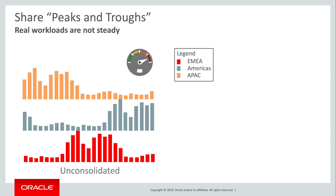Third, multi-tenant allows resources to be shared elastically between all the workloads, including both CPU and memory. Real workloads tend not to be steady. A load curve plots the instantaneous system load over a period of time. In this simplistic example, we see the various load curves for a global organization over a 24-hour period, with EMEA shown in red, Americas in grey, and APAC in yellow. We see the peaks in each division's workload, presumably corresponding to the working day in that part of the world. Because of the differences in time zones, these peaks do not align. A basic principle of consolidation is that the more workloads you consolidate, the less likely it is that they all reach peak load at the same time, just as we see here.